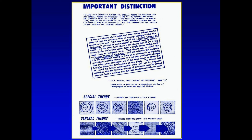So you have the kinds with variation within the kinds. But the general theory requires you to go from one kind to another kind — from single cell to multicellular, multicellular to fish, amphibians, reptiles, birds, mammals. That kind of progression.